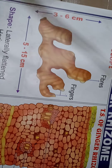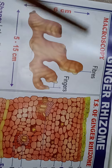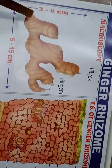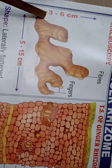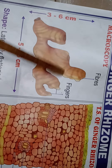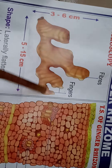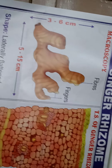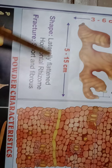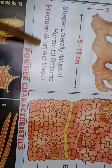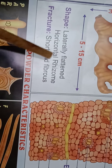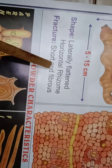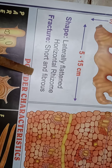Now I will explain in detail the TAS of the ginger rhizome. Here you can see the ginger macroscopy: in length it is 5 to 15 centimeters, in width it is 3 to 6 centimeters. Fibers are present on the ginger, and here are the fingers of this ginger. The shape is laterally flattened and it is a horizontal rhizome. Fracture is very short and fibrous — when we break ginger you must have seen some fibers at the broken part.